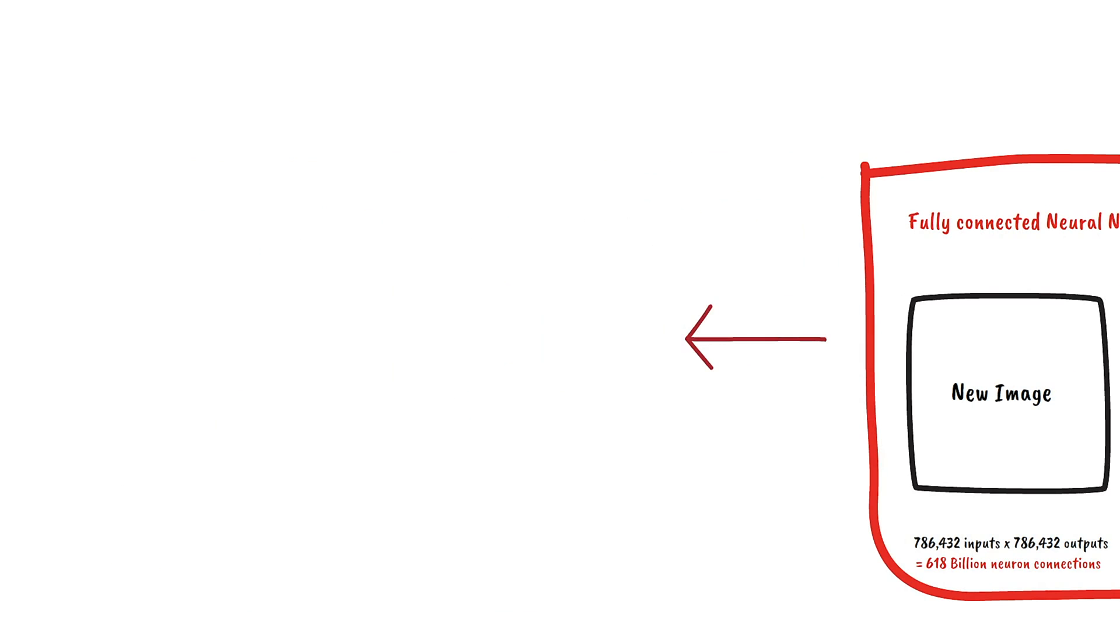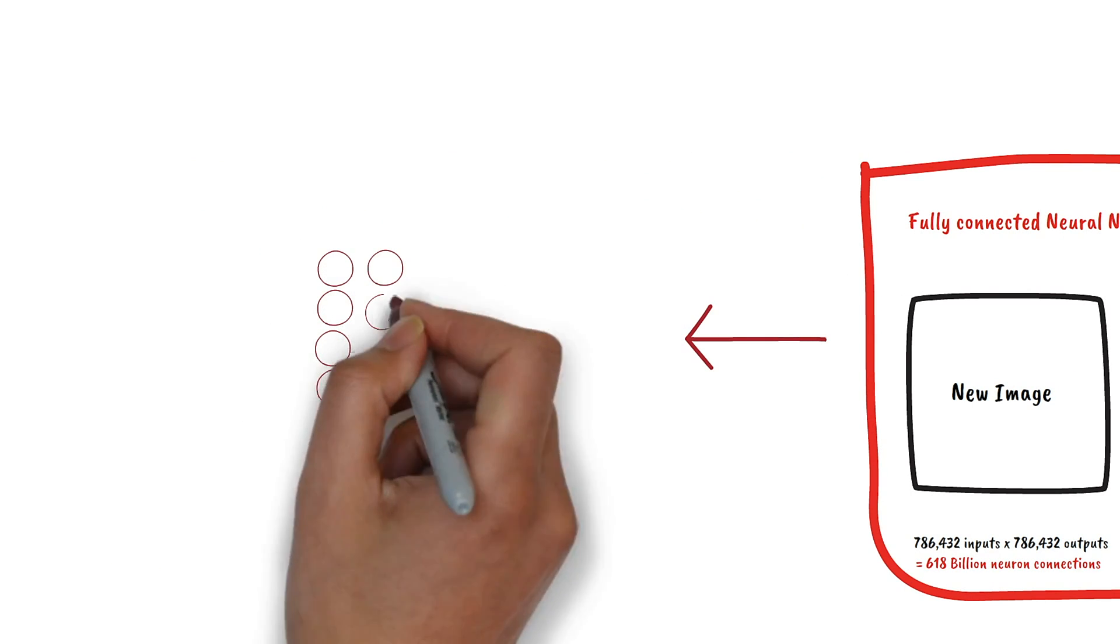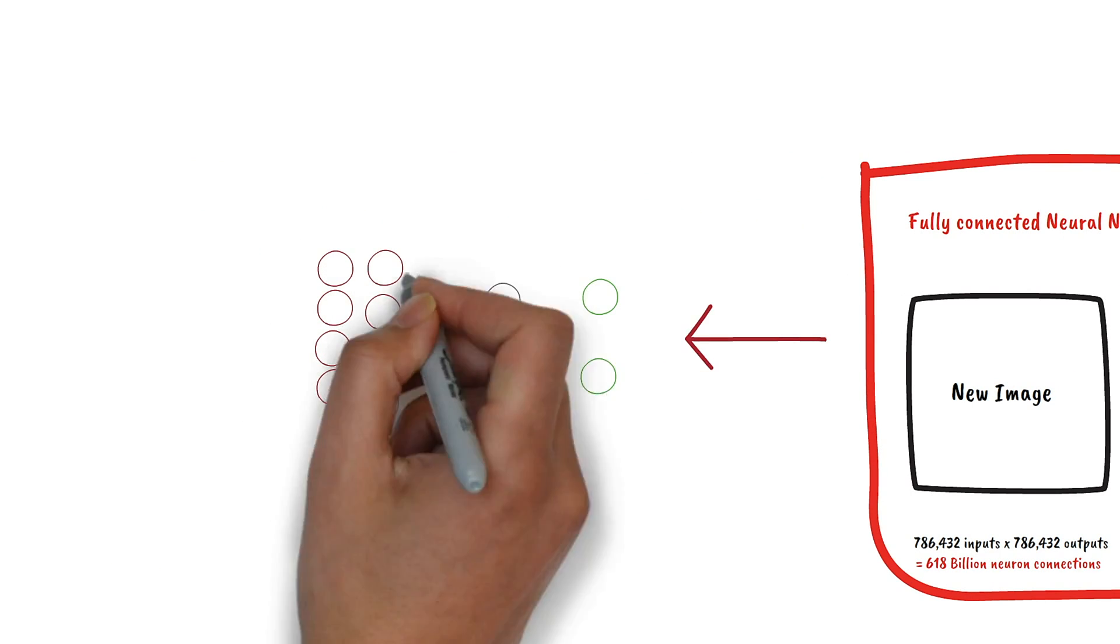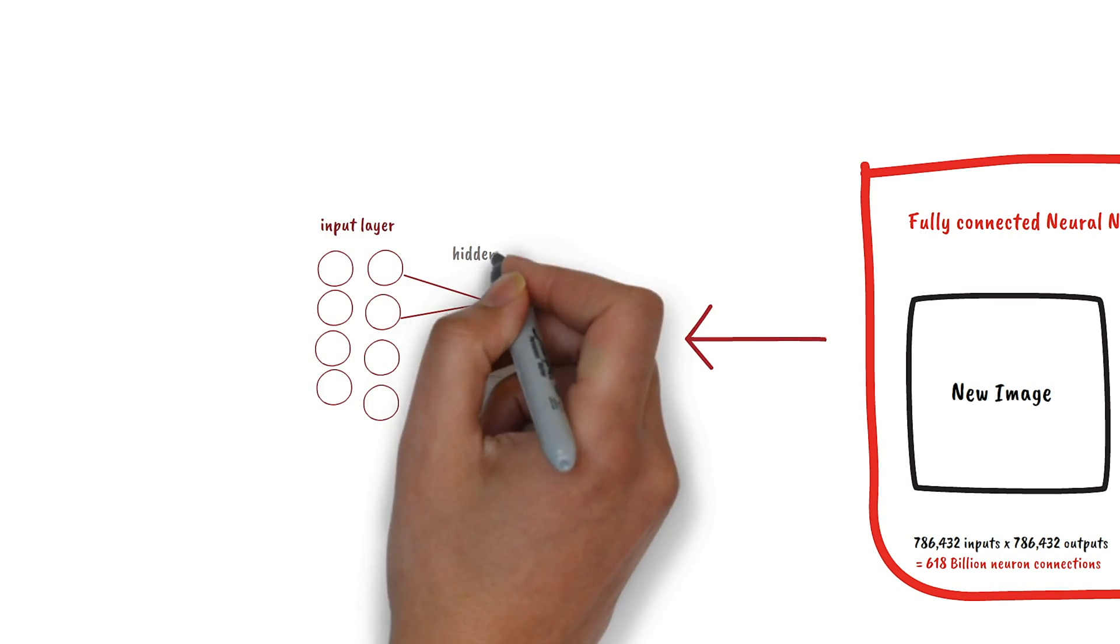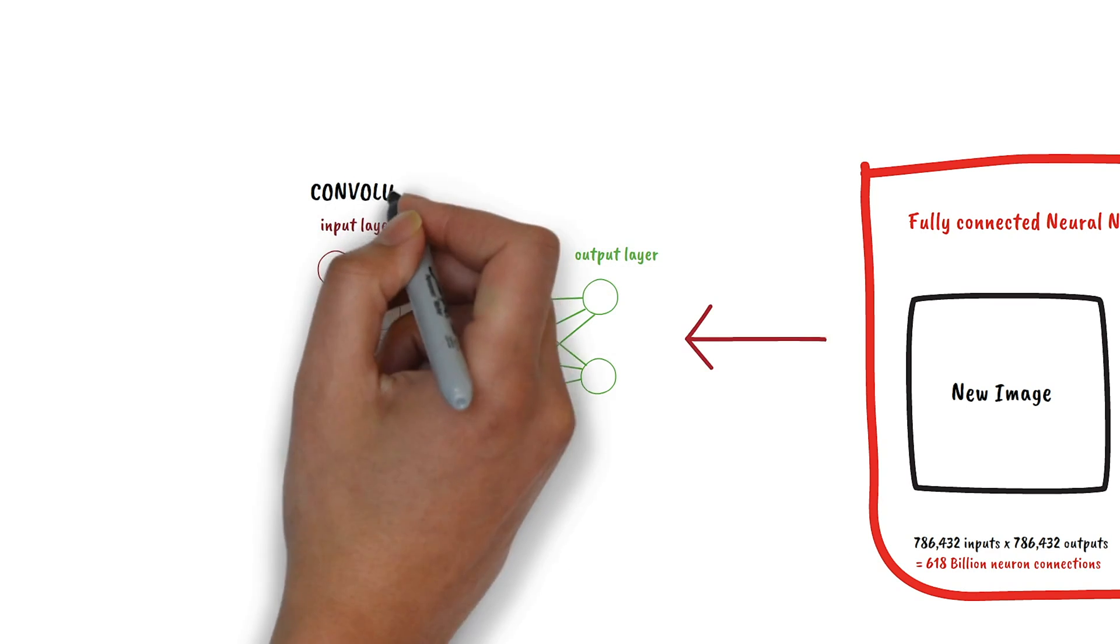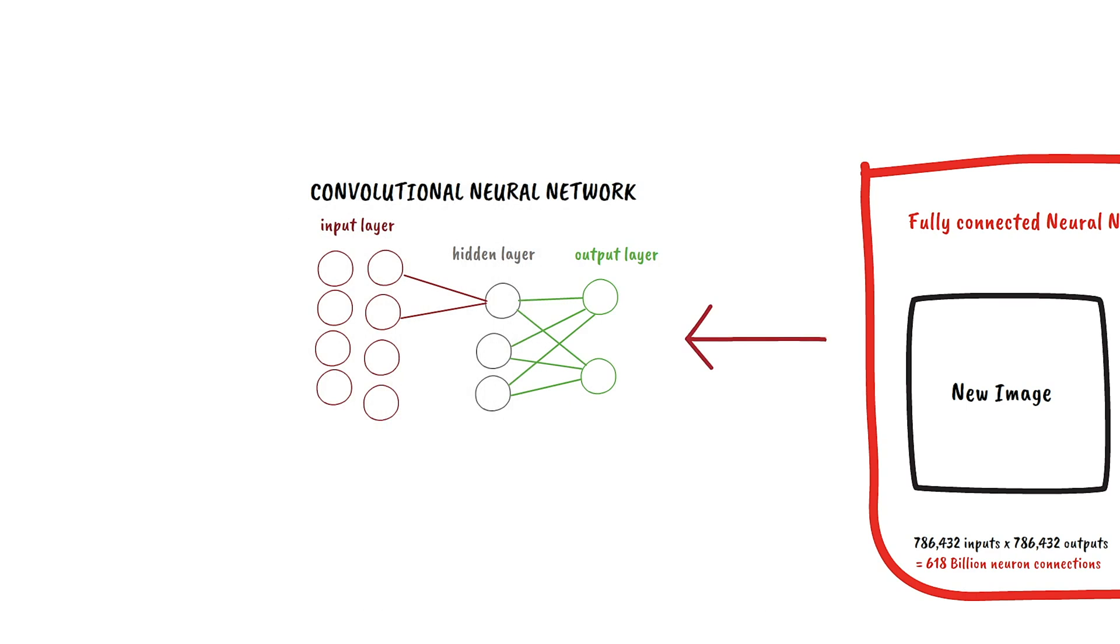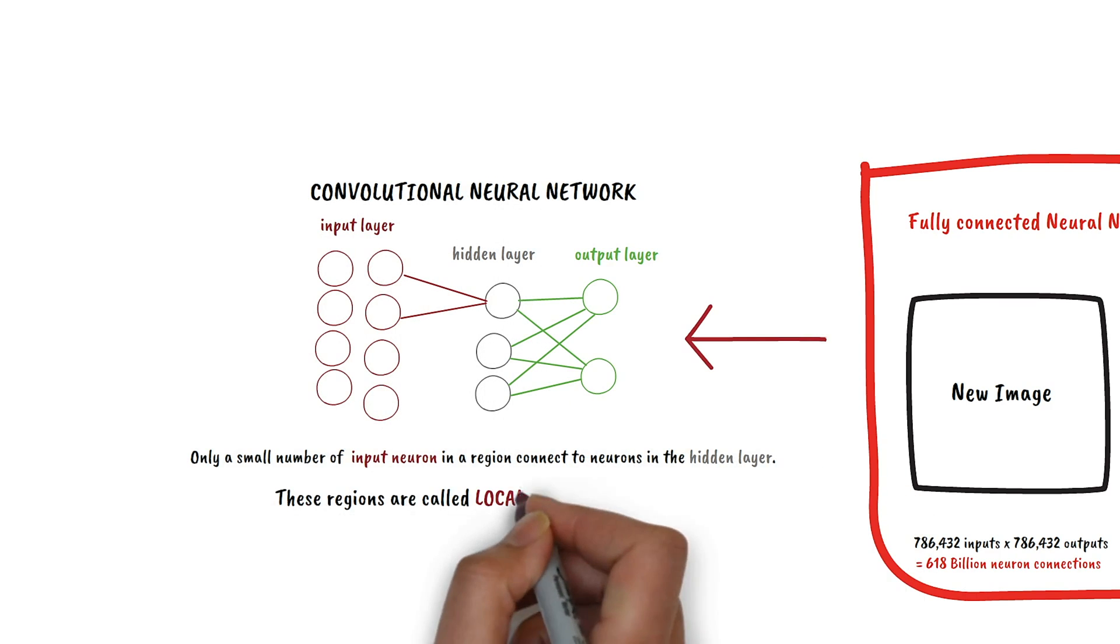So let's build a different kind of network, where only a small number of input neurons connect with the hidden layer, so there are way less connections. That's called a convolutional neural network. And the connected regions are called local receptive fields.